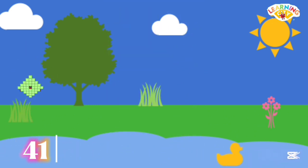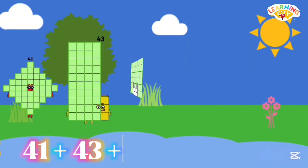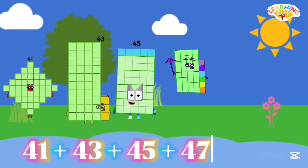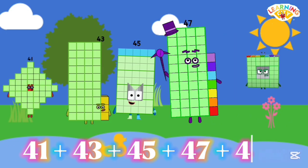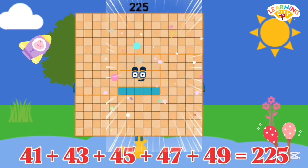41 plus 43 plus 45 plus 47 plus 49 equals 225.